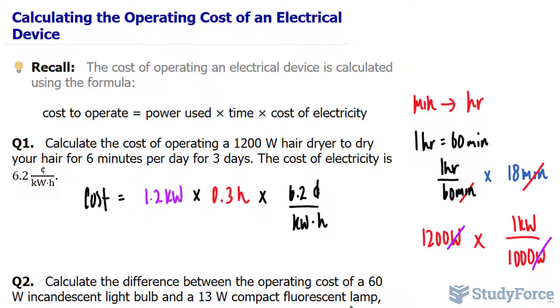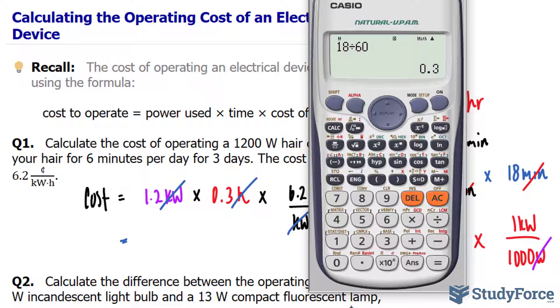Again, the units cancel out nicely, and we're left with the total cost in cents. So I'll take 1.2, multiply it to 0.3 times 6.2.